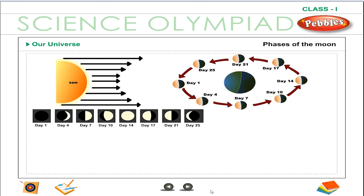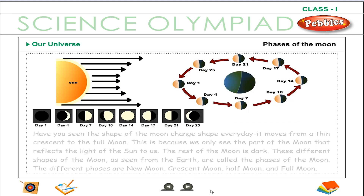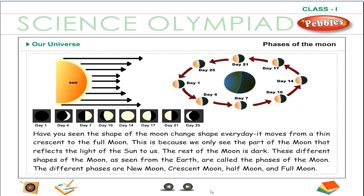Phases of the moon. Have you seen the shape of the moon change every day? It moves from a thin crescent to the full moon. This is because we only see the part of the moon that reflects the light of the sun.